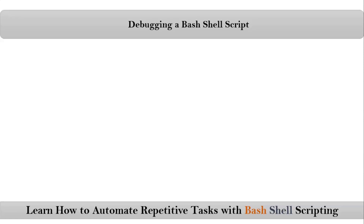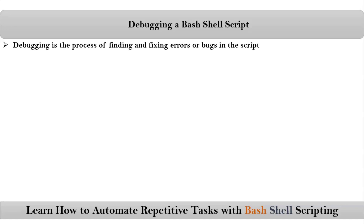Here we are talking about debugging a bash shell script. Debugging is the process of finding and fixing errors or bugs in the script. We get errors because sometimes you may be missing the exact syntax rules, or you may be using a variable which is not defined in your shell script. To identify all these things, we have different types of options with bash shell scripts.